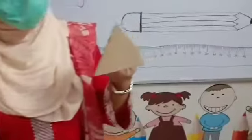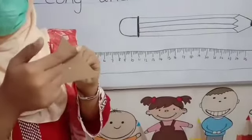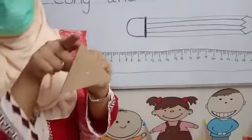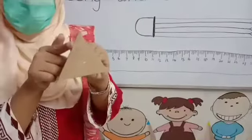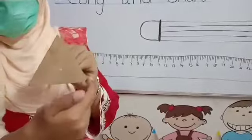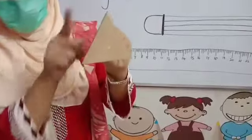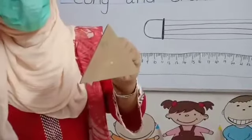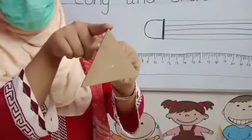Triangle has three sides. How many sides? One, two, three — and three corners. One, two, three. One side, two side, three side, and corners. One corner, two corner, three corners. Triangle has three sides and three corners.